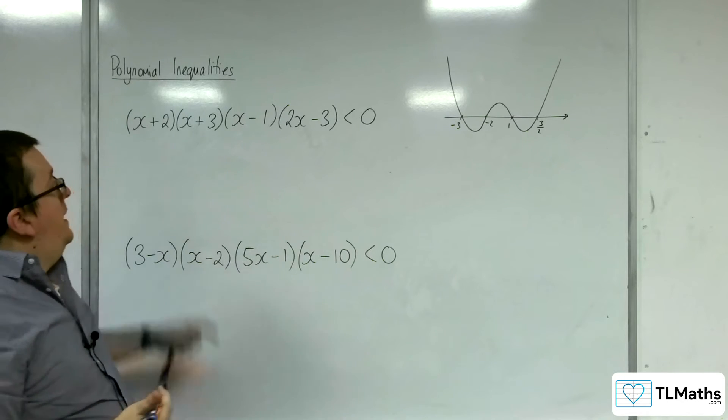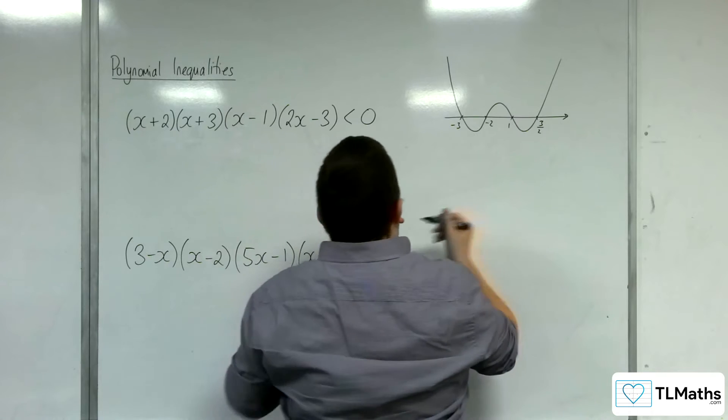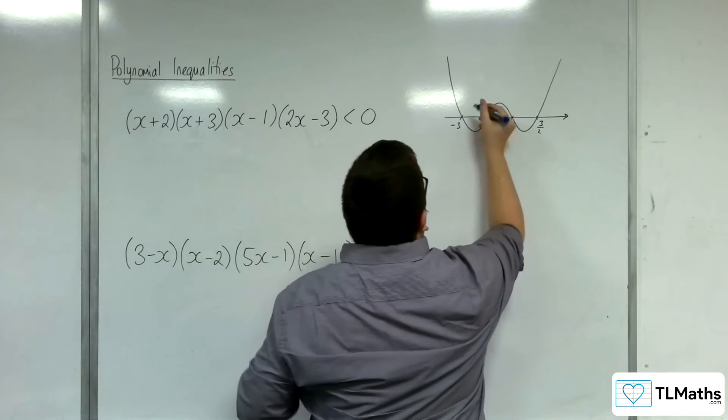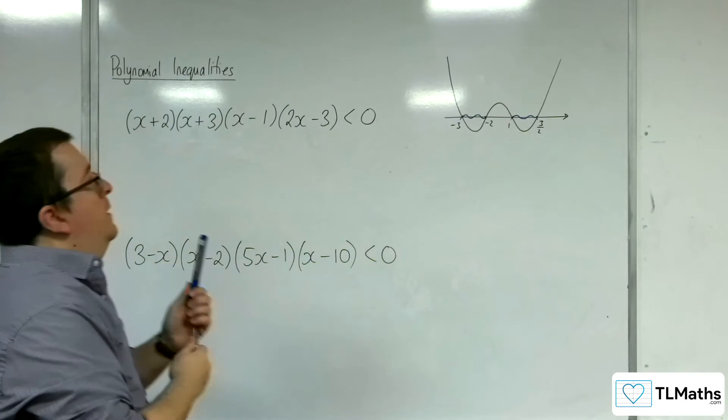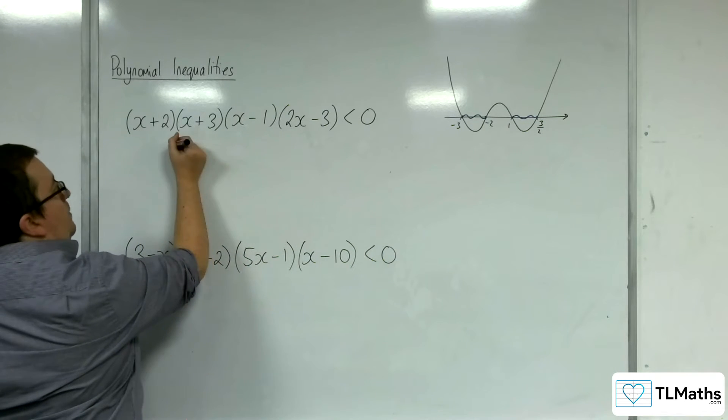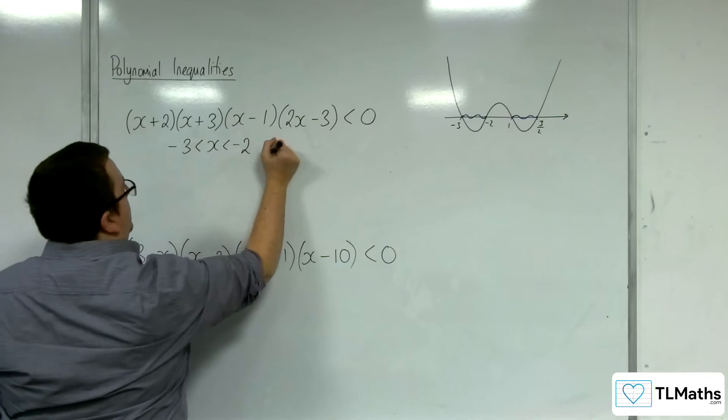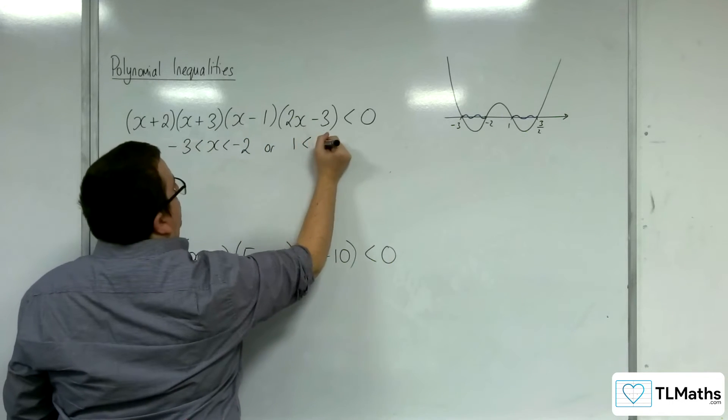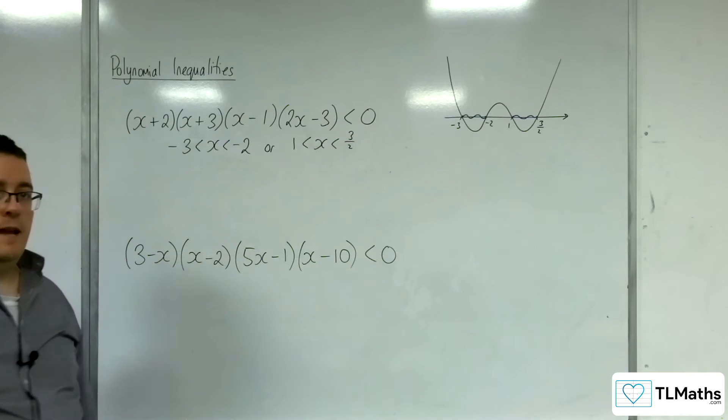So where is the quartic curve below the x-axis? Well, it's below it in this region here and this region there. So in inequality form, we would be saying minus 3 is less than x is less than minus 2, or x is greater than 1 but less than 3 halves.